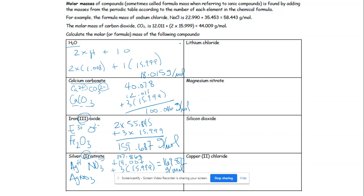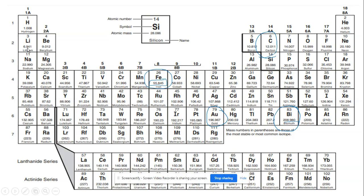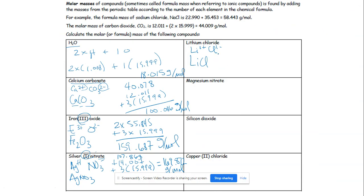Lithium chloride: lithium is Li with a charge of plus one, chlorine is Cl with a charge of minus one — those balance, so the formula is LiCl. Lithium's mass is 6.941 and chlorine's mass is 35.453. We only need one of each: 6.941 plus 35.453 gives us 42.394 grams per mole.